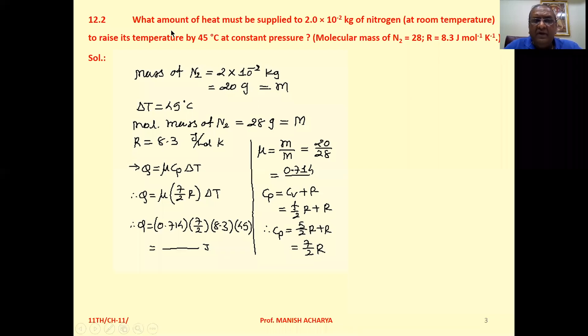Problem 12.2: What amount of heat must be supplied to 2 × 10⁻² kg of nitrogen at room temperature to raise its temperature by 45°C at constant pressure? Molecular mass of N₂ is 28, and R = 8.3 J/(mol·K). The mass of nitrogen is 2 × 10⁻² kg, which is 20 grams.